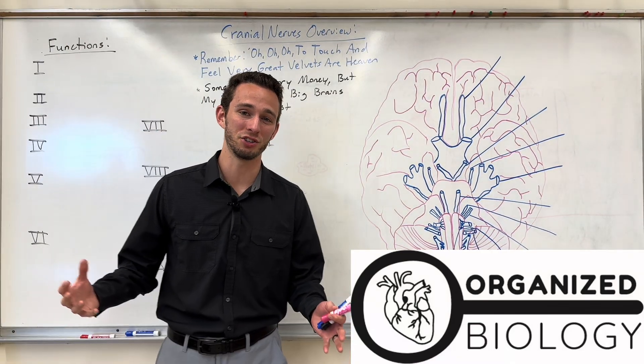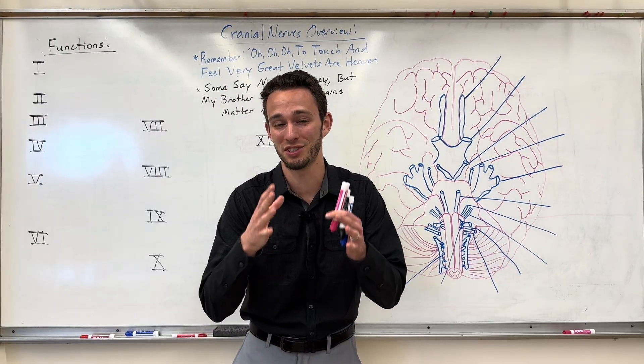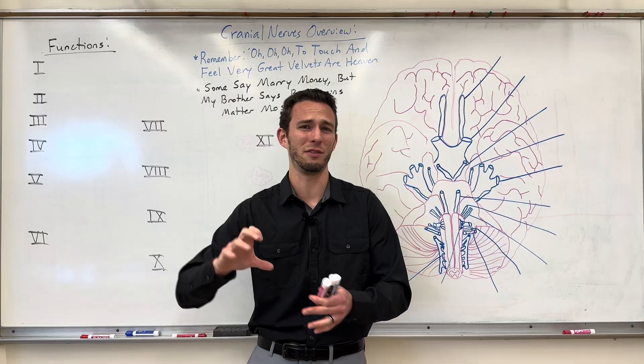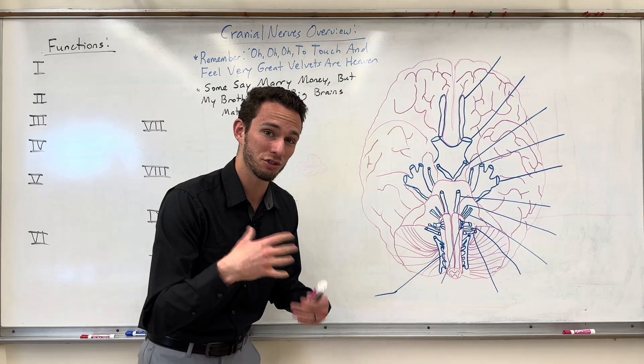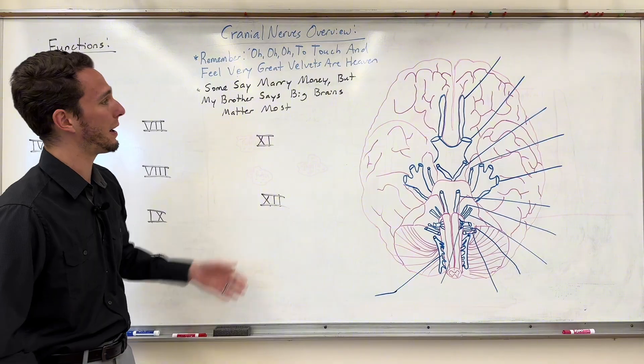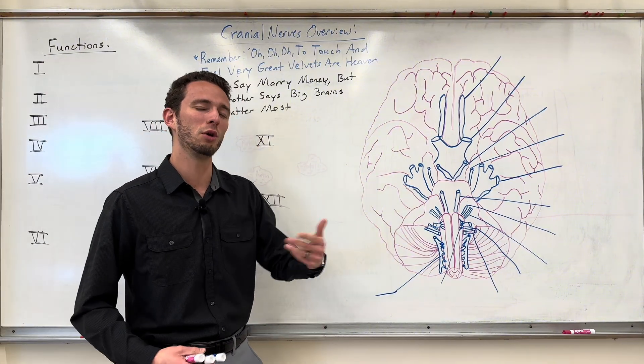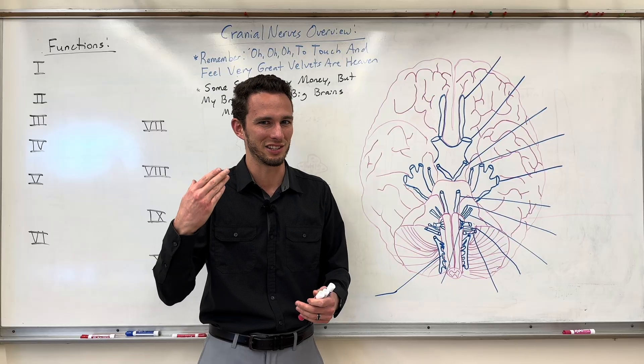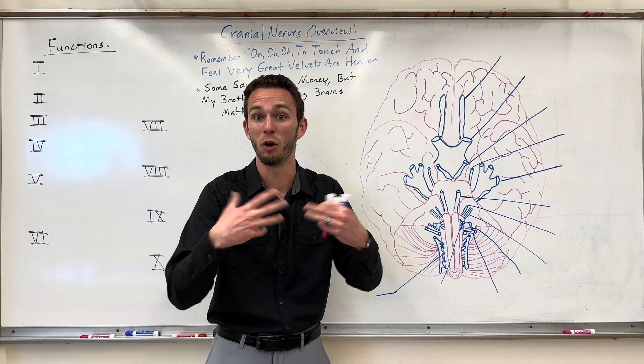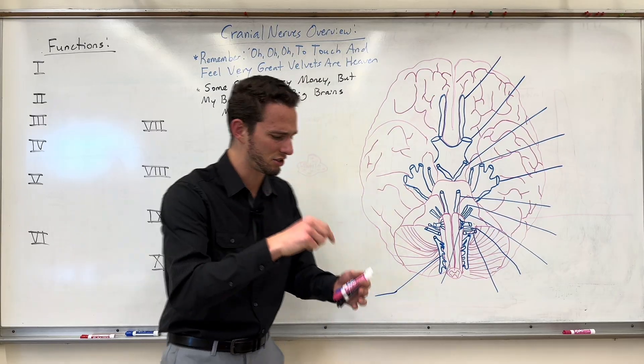Alright everybody, Mr. J here from Organized Biology. You're learning about the cranial nerves today. There are 12 of them. They have wacky names, a lot of different functions, but I've made some helpful mnemonics to help you out.